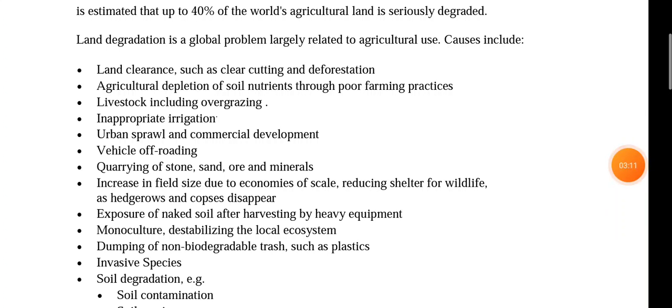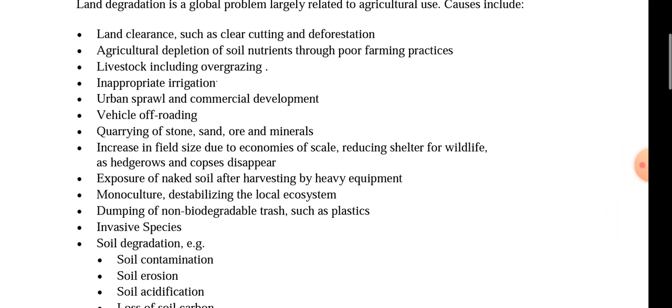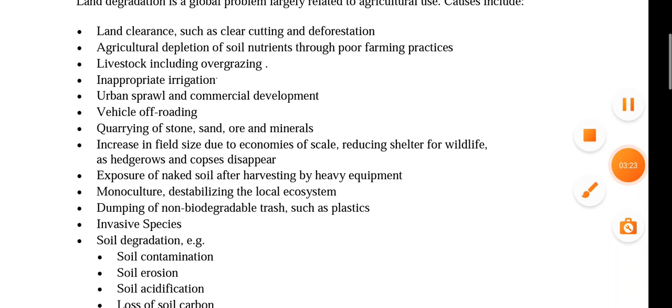Causes related to agricultural use include: land clearance, cutting, deforestation, poor farming practices, depletion of soil nutrients, livestock overgrazing, inappropriate irrigation, vehicle offroading, increase in field size, and monoculture.